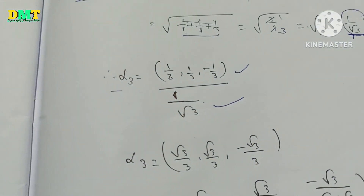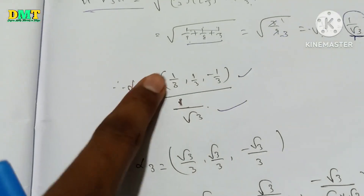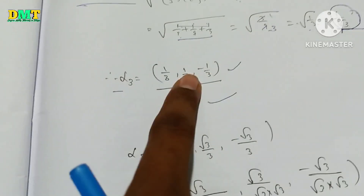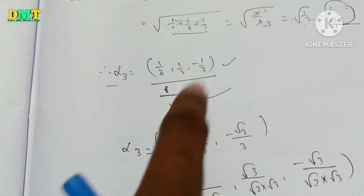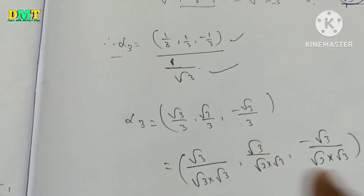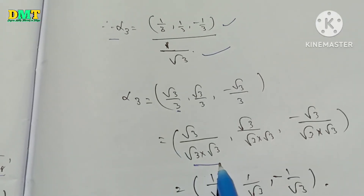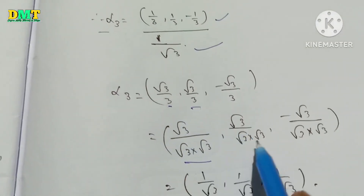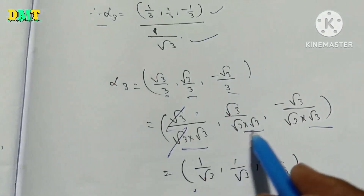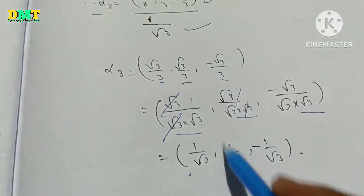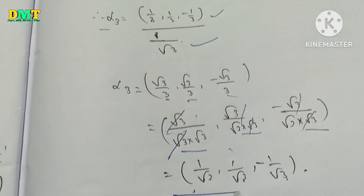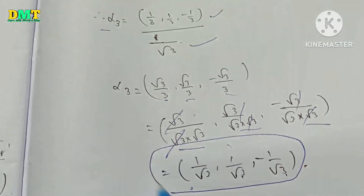So we know gamma3 and norm gamma3. Now we have alpha3: gamma3 divided by norm gamma3. Gamma3 value is here and norm gamma3 value is here. In the calculation, you can cancel one by one. You can make this value by pi. Root3/3, root3/3, minus root3/3. If 3 is equal, root3 to root3 — that's the same. Cancel one by root3. Cancel one by root3. Cancel minus one by root3. So this is alpha3 value: (1/root3, 1/root3, minus 1/root3).